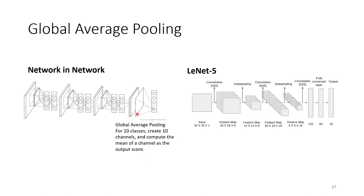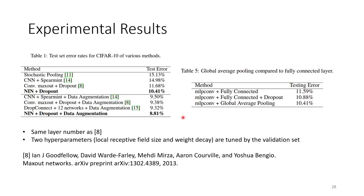So in the network in network paper, it proposed another method called global averaging pooling. It replaced the fully connected layers in the LeNet-5 network, and it turns out a good result. How good is it? So let's take a picture. So this is their result. So in 2014, it achieved the state-of-the-art performance.